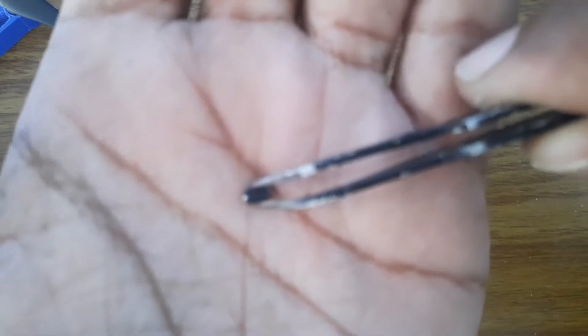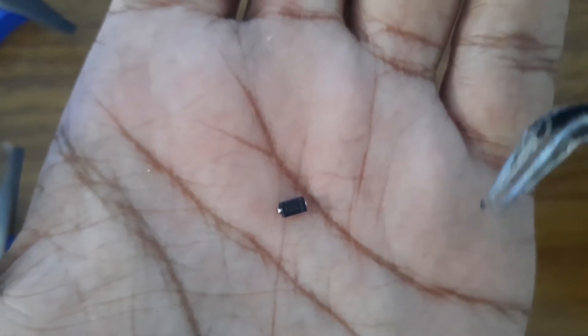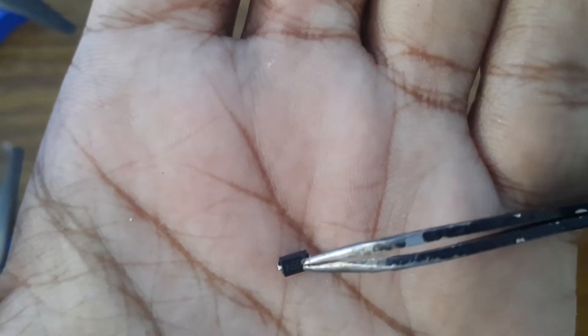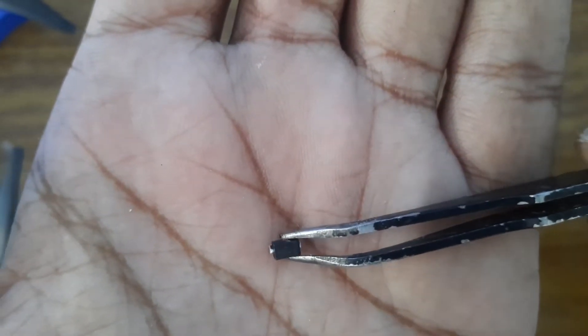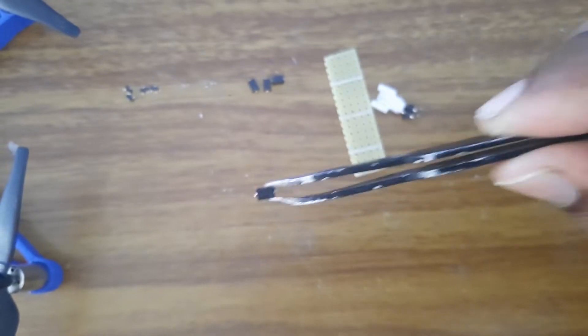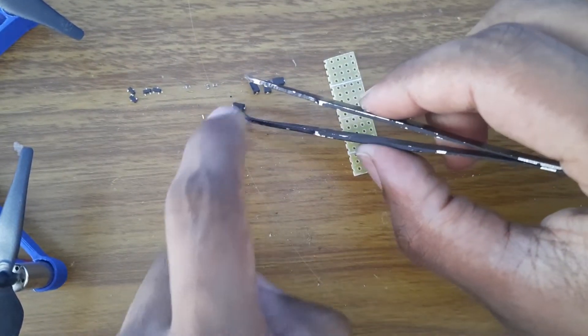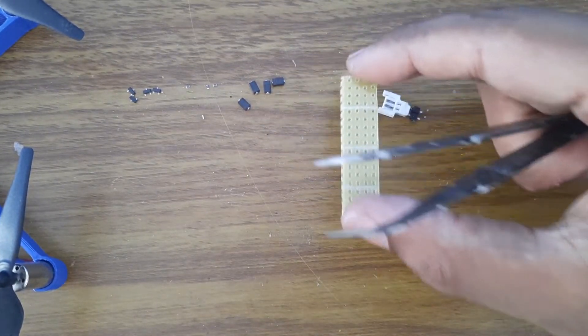You will also need some Schottky diode. This is the SS14 Schottky diode. The polarity of this SMD Schottky diode is very important. You can see there is a bar right there. The bar indicates the cathode of the Schottky diode. Remember that we will be using this mark as reference to make this brushed DC motor ESC.